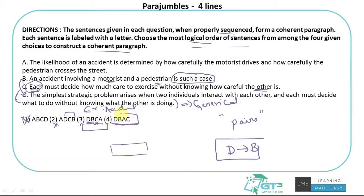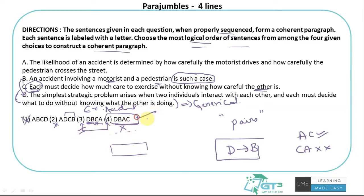I would go with DBAC because after establishing the accident scenario in B, A elaborates on the motorist and pedestrian dynamic, and then C about each deciding how much care to exercise flows naturally. Reading AC is more meaningful than CA. So the answer is DBAC. Though CA isn't terrible, with these options available, DBAC is the better sequence.